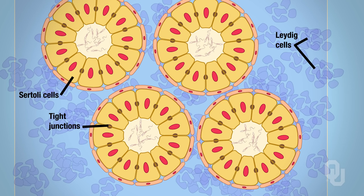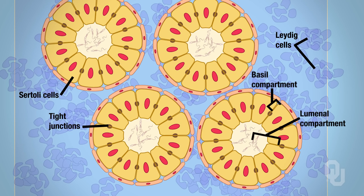These are all the cells that are really important. In addition to these structures, you will need to be familiar with the following compartments: the basal compartment and the luminal compartment. These compartments refer to regions of the cross section. The basal compartment is the area from the tight junction toward the smooth muscle, and the luminal compartment is the area from the tight junction toward the lumen.